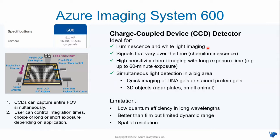CCD detector is still the best detector for chemiluminescence signals because it can capture the total field of view, and is ideal for luminescence and white light imaging. Signals that vary across time — like chemiluminescence — can be set at a certain exposure time, up to 60 minutes. Simultaneous light detection in a large area allows you to capture the entire image of a gel, protein gel, DNA gel, or even 3D objects. The CCD camera's limitation is lower quantum efficiency at wavelengths longer than 800 nanometers, and spatial resolution is heavily dependent on the camera's resolution.